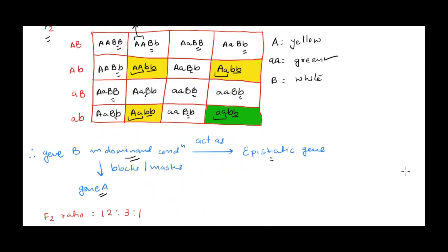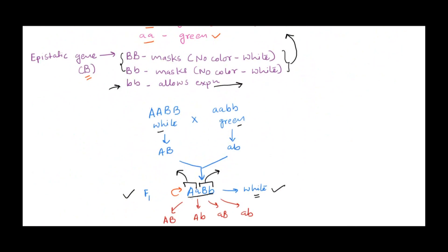The F2 ratio for dominant epistasis is 12:3:1 — twelve white color fruit, three yellow color, and one green color fruit. This ratio is very important. Sometimes in exams they'll give you a ratio and a table and ask you to work out what type of epistasis you are dealing with, so you can identify the type of epistasis from the ratio.